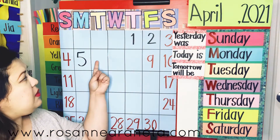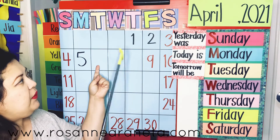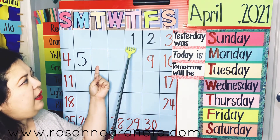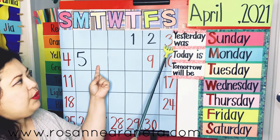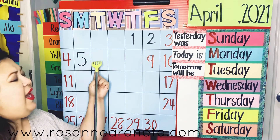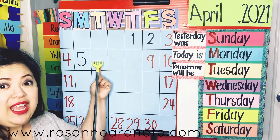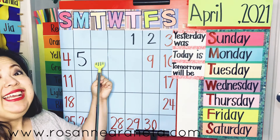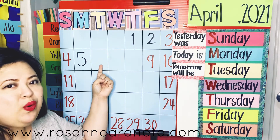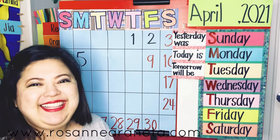Remember, we stop counting when we reach this spot. Let's begin. 1, 2, 3, 4, 5, and what comes after 5? 6. Nicely done. This spot is only for the number 6.